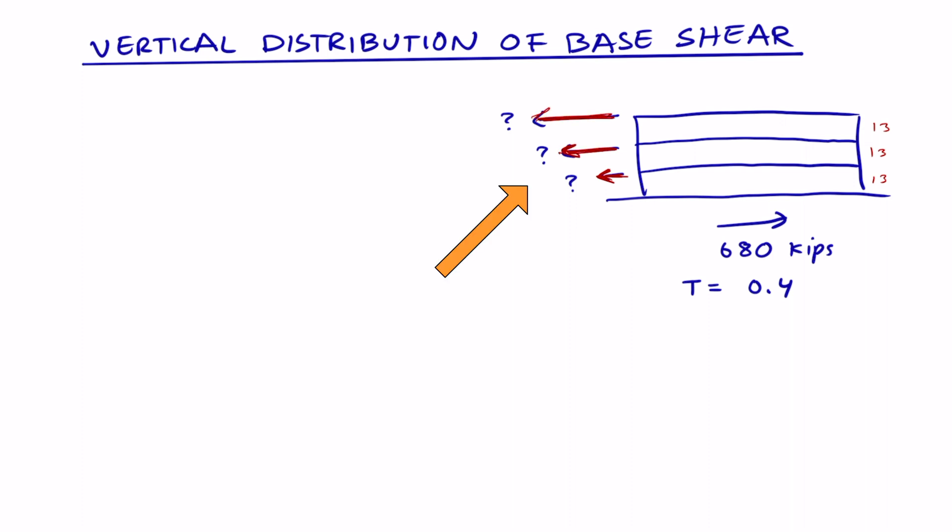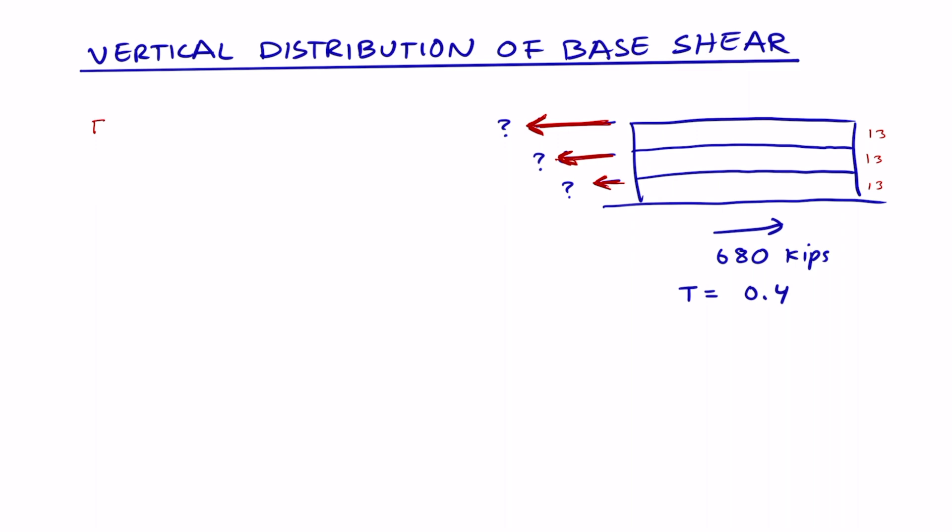For multi-story buildings, the seismic base shear represents the sum of inertial forces acting at various levels of the building. To distribute the base shear over the height of the entire building across each level, we'll use the following equation.